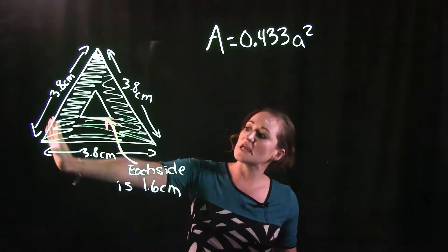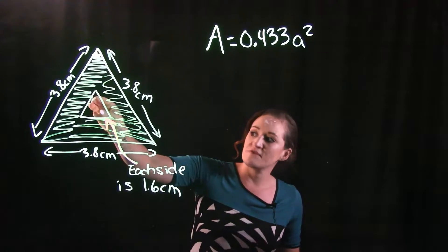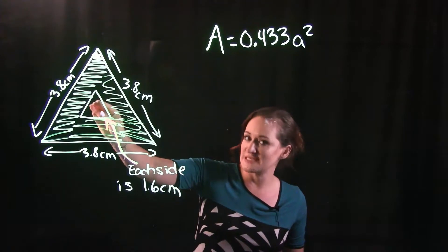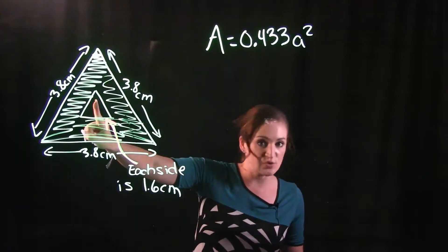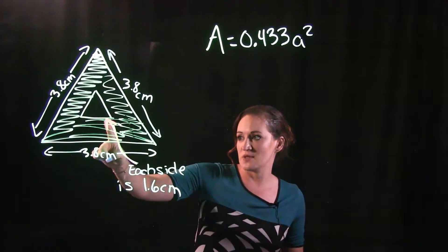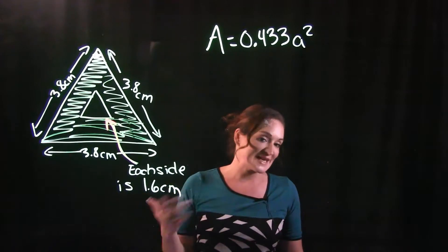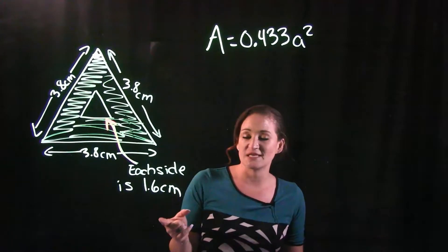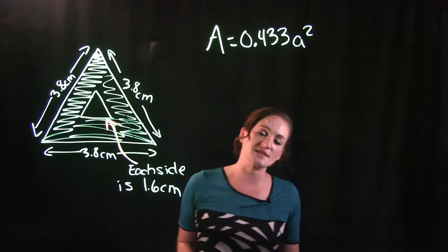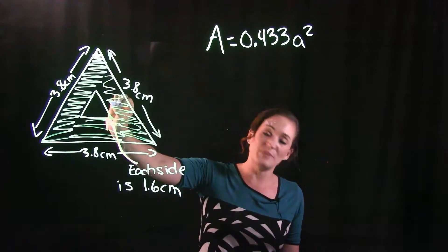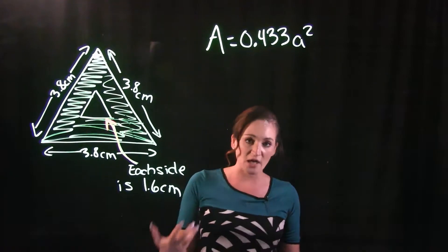If we notice this side over here that's shaded, we have this triangular center here that is not. When it comes to this triangular center, we also know all the sides of that because it says right here what this arrow is pointing to is that each side is 1.6 centimeters. So that means 1.6, 1.6, 1.6 on each side. The middle piece here is also an equilateral triangle.